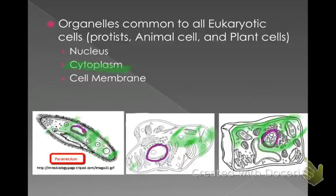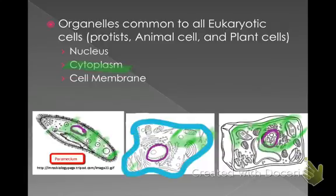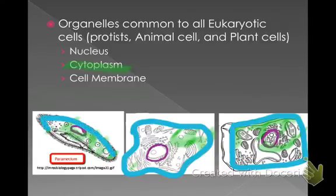The last of the three common organelles is your cell membrane. The cell membrane provides support and protection for your cell and decides what can come in and out. It goes around the outside of the cell — here it is in your animal cell, here it is in your plant cell, and in your paramecium it is right inside where all those little cilia are. Those three organelles are common to all of the cells we'll be talking about.